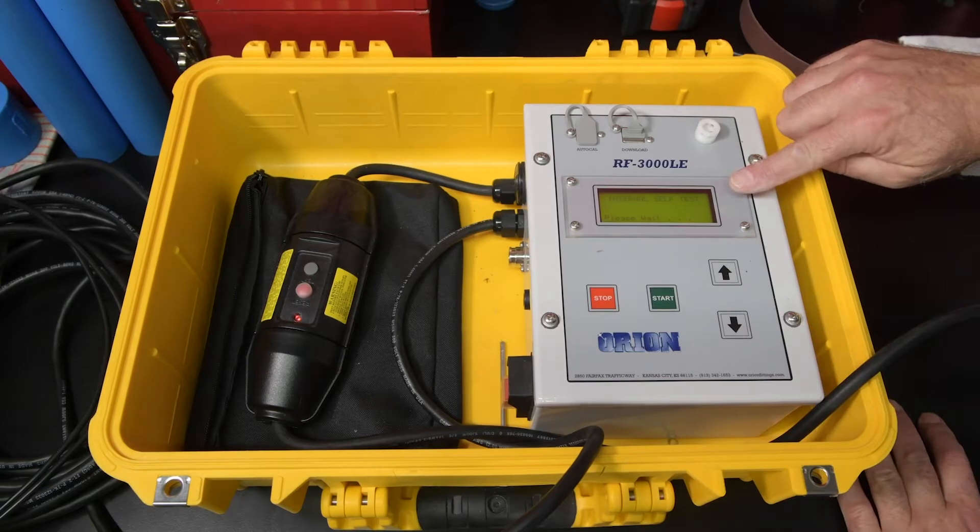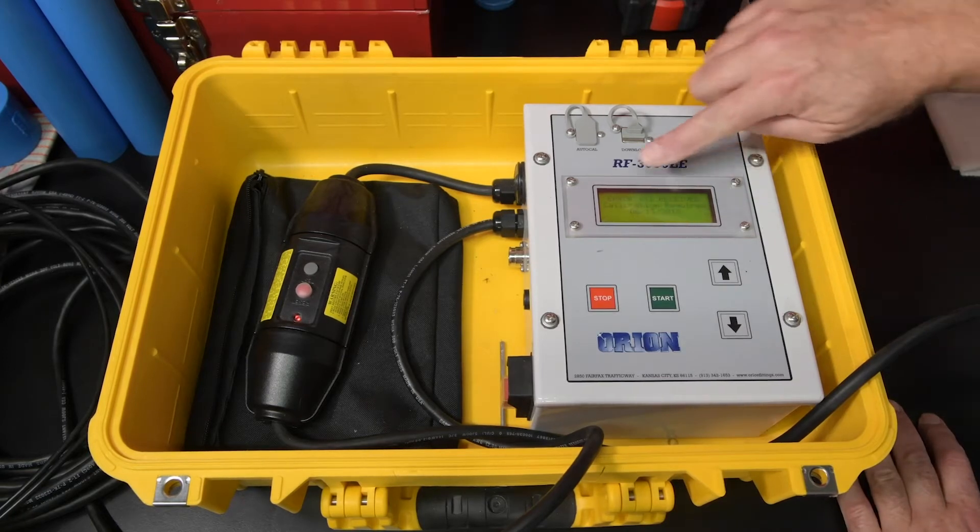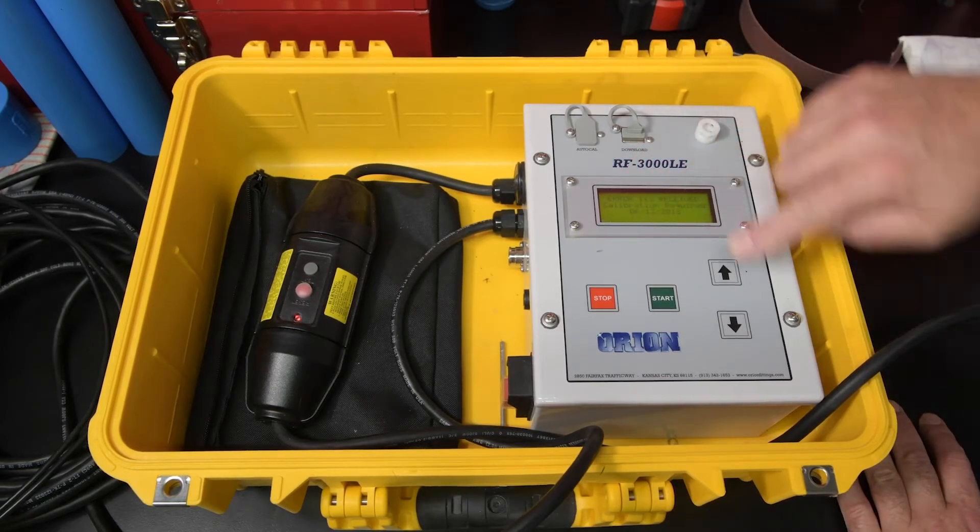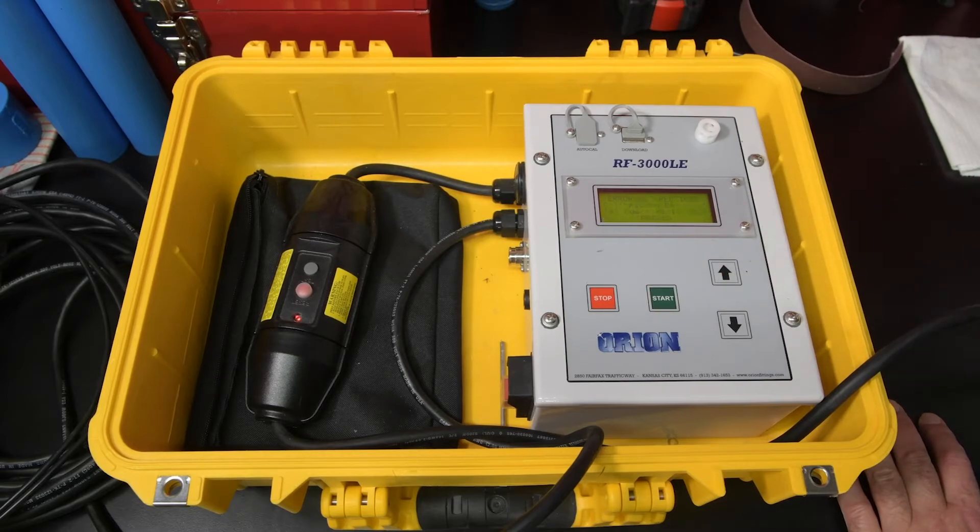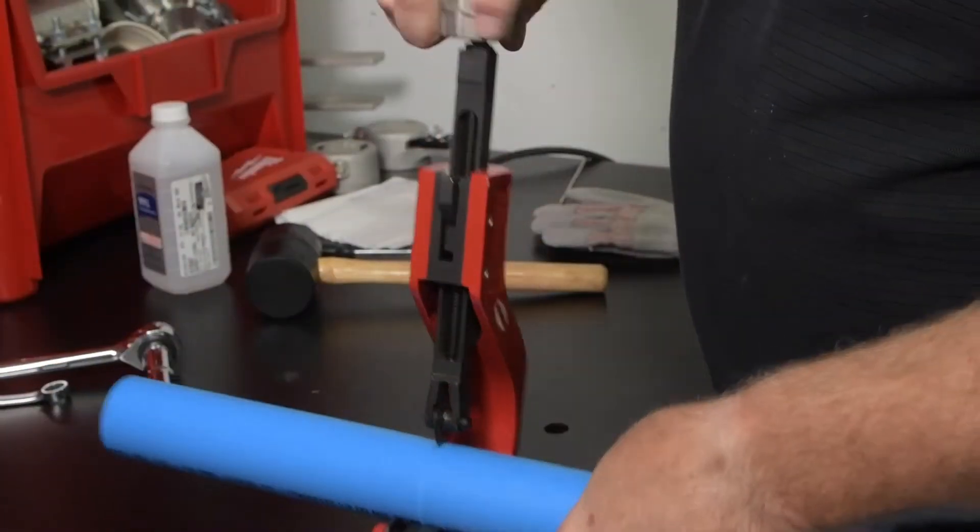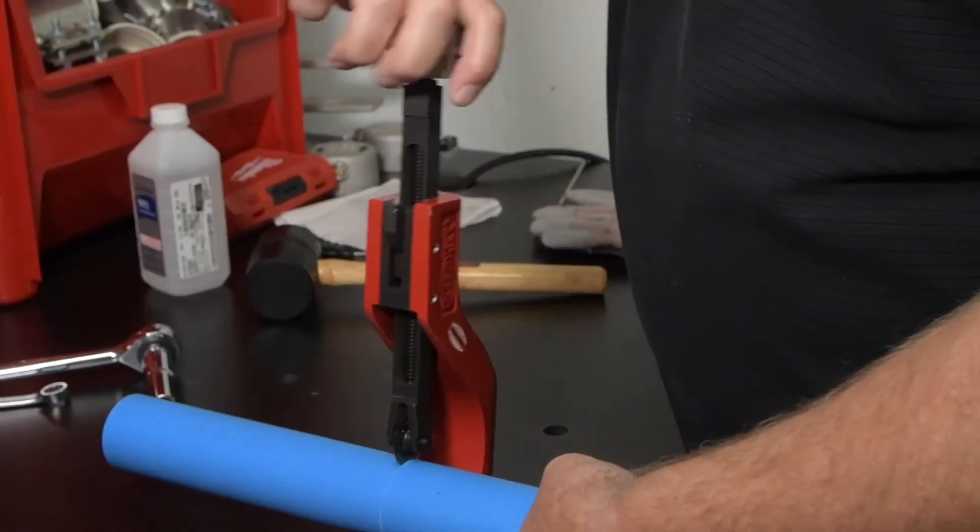If the due date is passed or is within the life of your project, stop and contact your Orion representative for instruction on how to get your machine properly calibrated. Material preparation is essential to achieve a quality fuse.